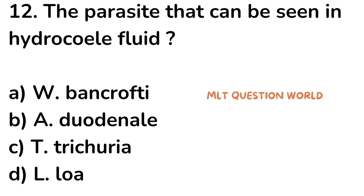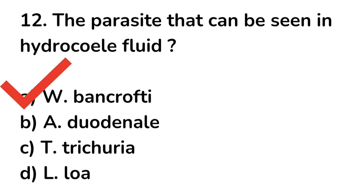Question number 12. The parasite that can be seen in hydrocele fluid: option A. Wuchereria bancrofti, option B. Ancylostoma duodenale, option C. Trichuris trichiura, option D. Loa-Loa. The right answer is option A, Wuchereria bancrofti. The parasite that can be seen in hydrocele fluid is Wuchereria bancrofti.